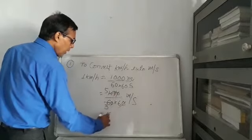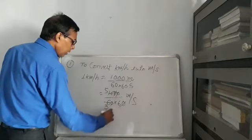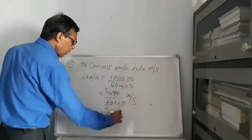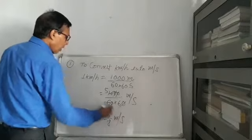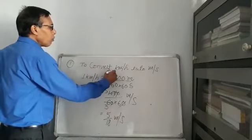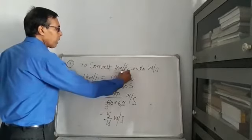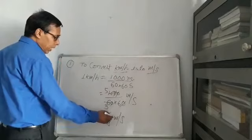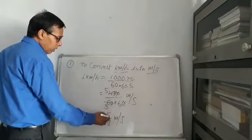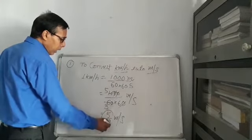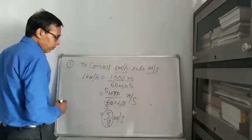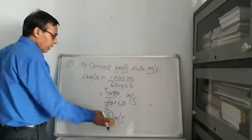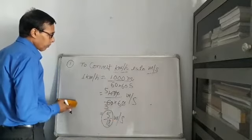After simplifying, we get 5 by 18 meters per second. So if you have to convert kilometers per hour into meters per second, multiply that quantity by 5/18 and it will be converted into meters per second.